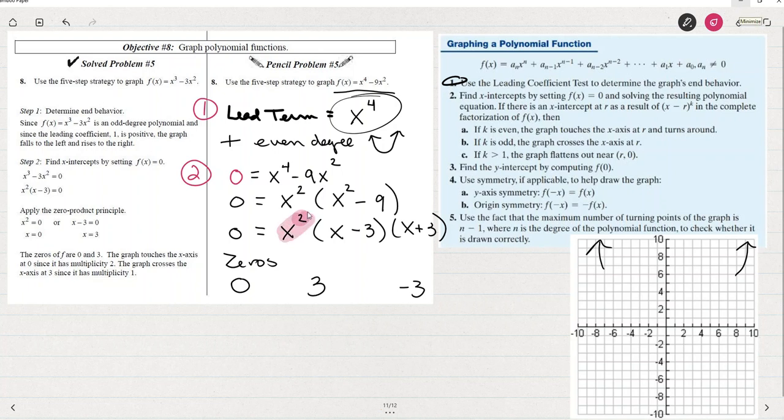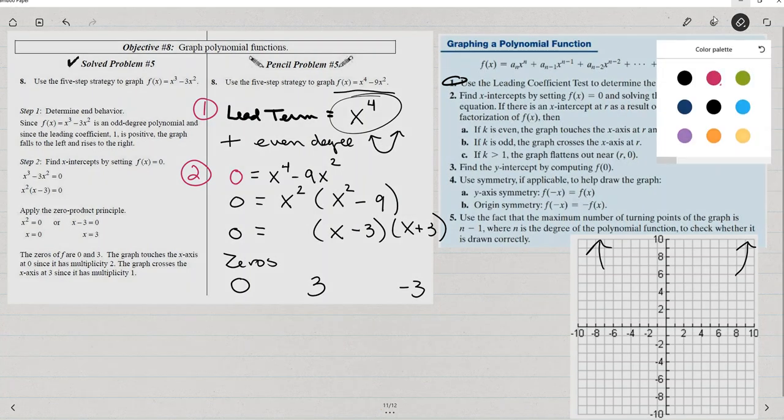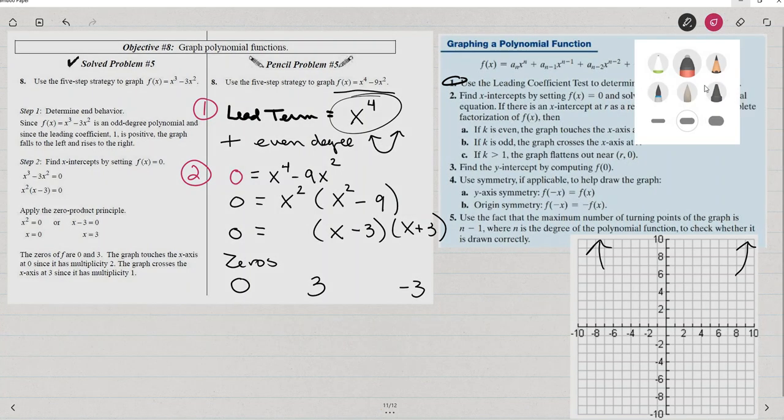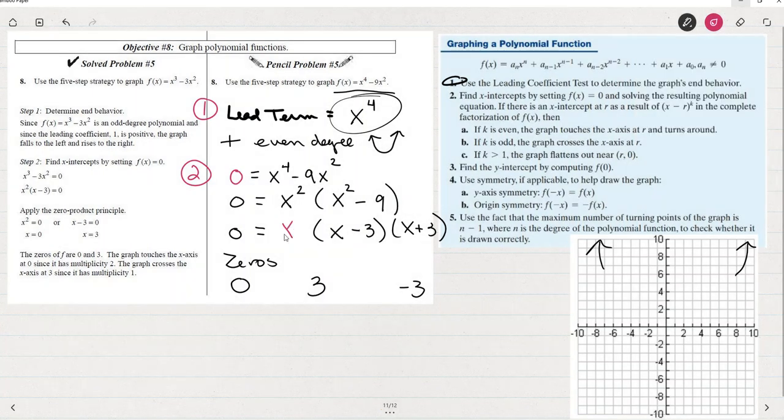Because you see, I could have written that x squared as an x times x. Right? x squared is x times x. So I'd see that this zero would have been repeated.